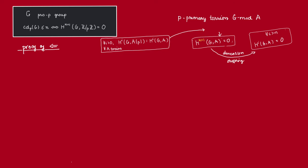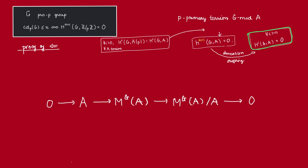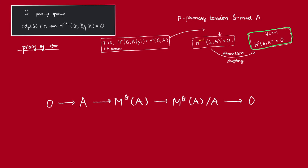Thus we are done with step two, and now we need to do step three by dimension shifting. The argument is exactly like in the case when we compute the cohomological dimension of Ẑ, so we won't repeat it here. But the key idea is to look at the long exact sequence of cohomology coming from this short exact sequence. Thus, we have shown that to compute the cohomological dimension of a pro-p group, it suffices to look at dimension n+1 and the coefficient Z/pZ.